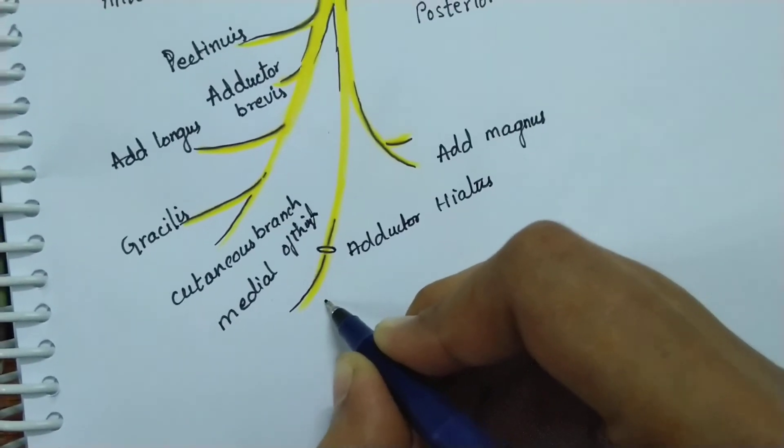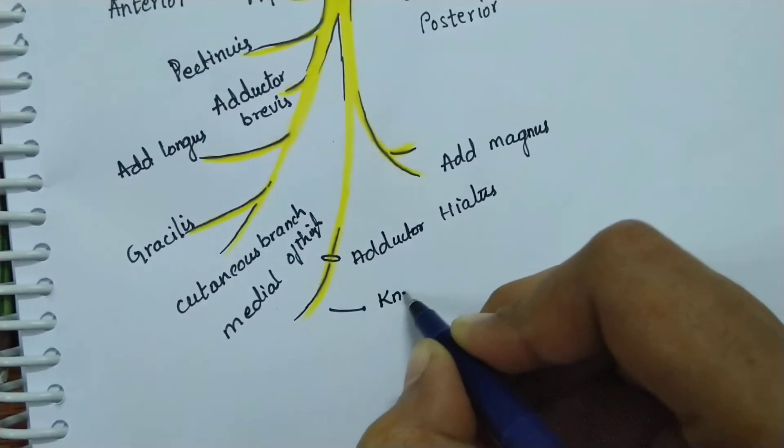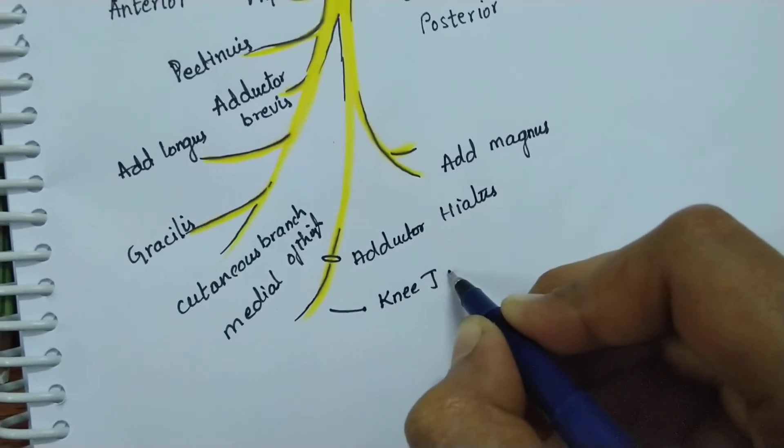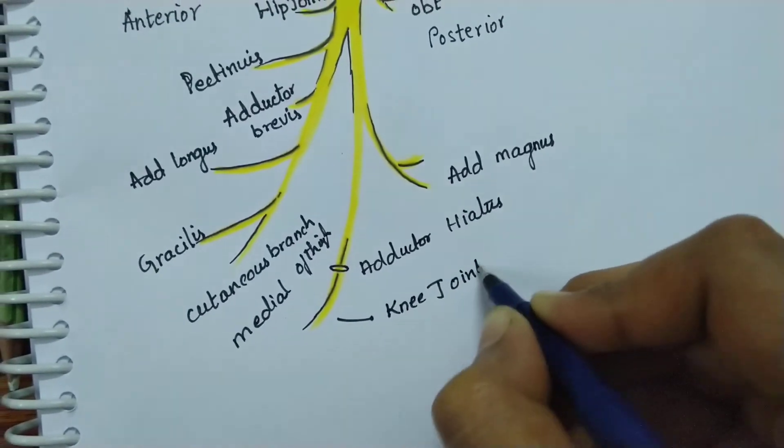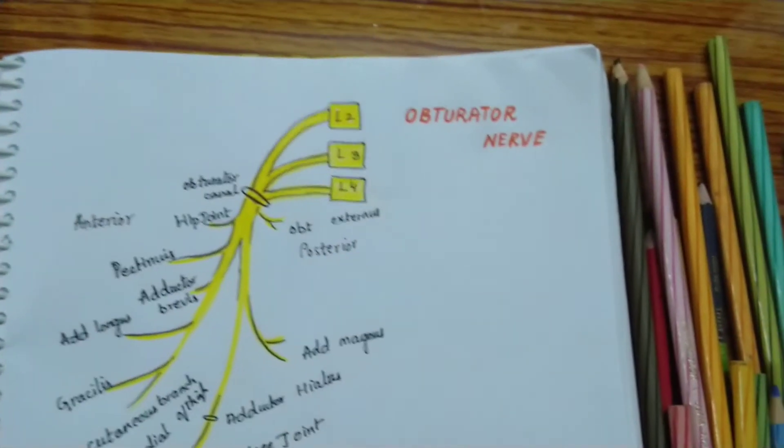Then it gives a branch to the knee joint. That is the articular branch. So this is about the obturator nerve.